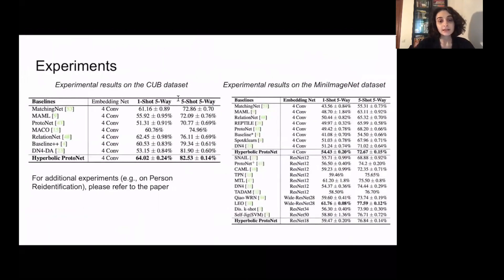On this slide you can see some of our experimental results. Additional experiments, for example on person re-identification, can be found in our paper. In most settings we have outperformed methods operating in Euclidean or spherical spaces, even using a very simple convolutional network.